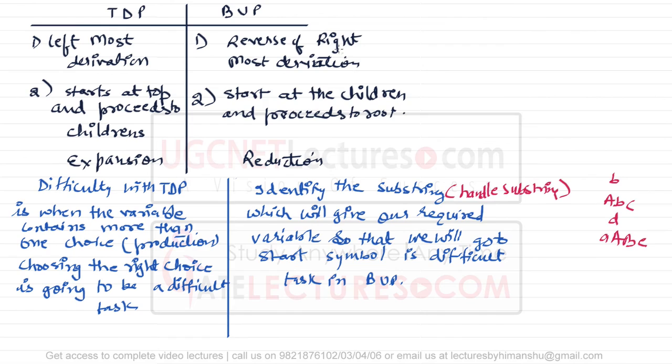Top-down parsers are again of two types: number one, top-down parser with backtracking — also called recursive descent parser — and number two, top-down parser without backtracking — also called predictive parser. We will also see the LL(1) parser, which is a non-recursive descent parser.